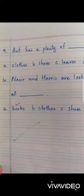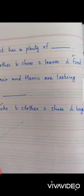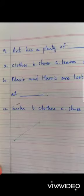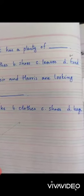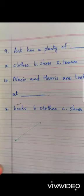Number nine: ant has a plenty of blank. Options: clothes, shoes, leaves, food. Correct option is food. Number ten: Nasir and Harris are looking at blank. Options: books, clothes, shoes, bags. Correct option is books.